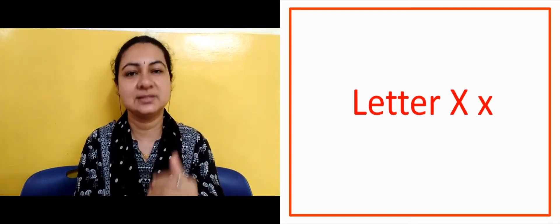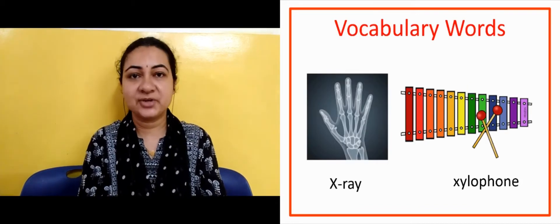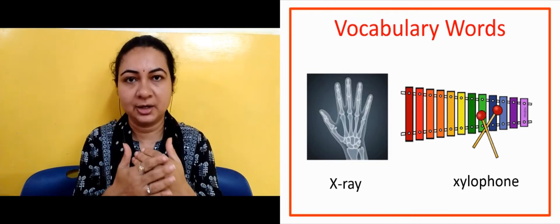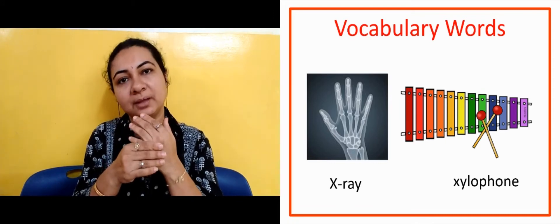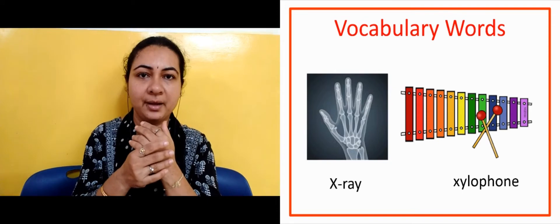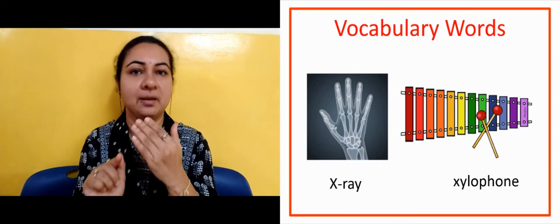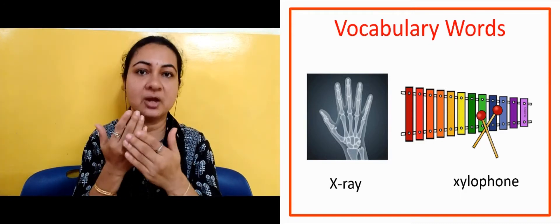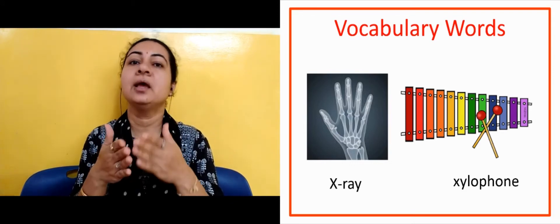Let us see some vocabulary words. The next slide is showing us X-ray. We use X-ray when our body parts have a fracture or something. The doctor says we need to take an X-ray, and here we can see the hand shown in the X-ray image. If any part of our body has a fracture, we show the doctor, and the doctor suggests you have to get an X-ray.